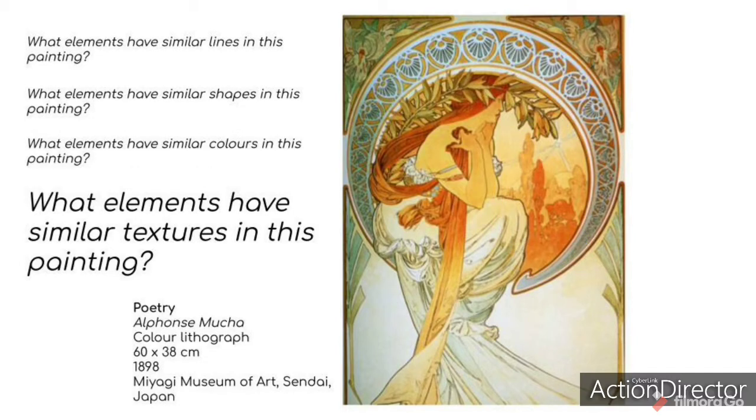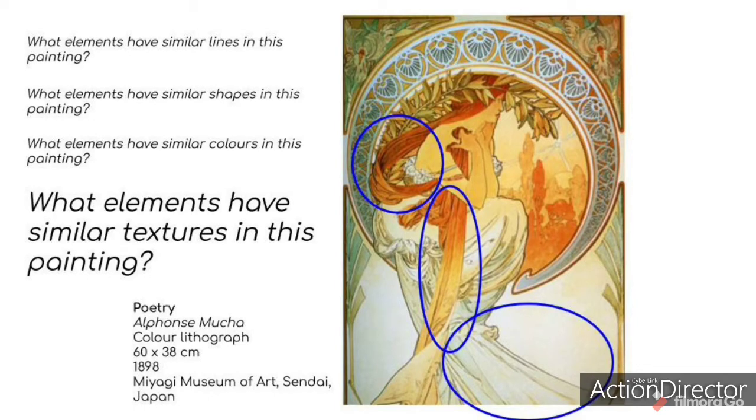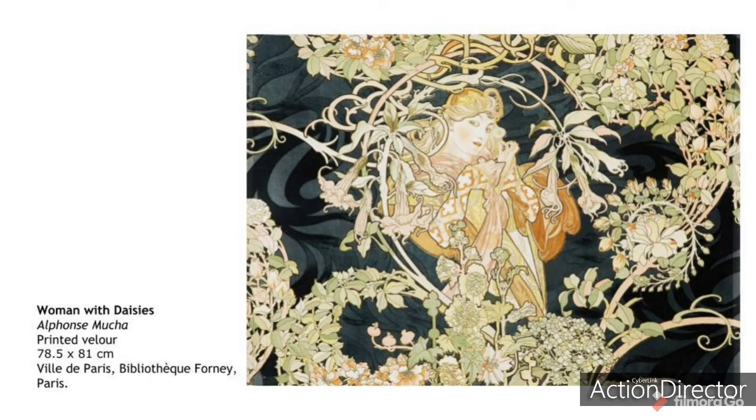And what elements have similar textures in this painting? The hair and dress seem to have the same smooth texture. This piece is called Woman with Daisies. It's a lithograph by Alphonse Mucha, done on printed velour.